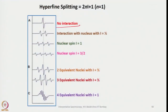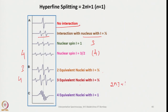For example, with no interaction we see a single peak for one unpaired electron. Interaction with one nucleus of I = ½ splits into 2 lines; with one nucleus of I = 1 gives 3 lines; with one nucleus of I = 3/2 gives 4 lines. Two equivalent nuclei with I = ½ give 3 lines; three equivalent nuclei with I = ½ give 4 lines; four equivalent nuclei with I = 1 give 9 lines (2×4×1 + 1 = 9). This illustrates the patterns of hyperfine splitting.